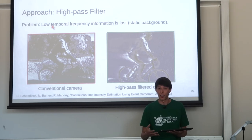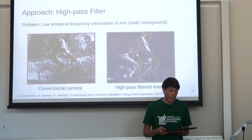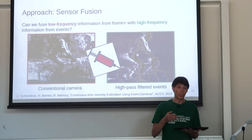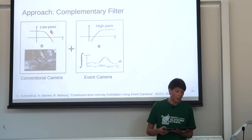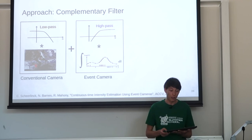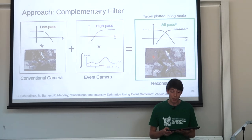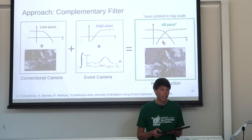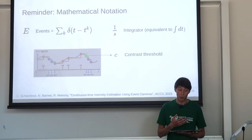The question is: can we fuse the low-frequency information from image frames into our estimate? We propose taking a low-pass filter applied to the image frames to extract low-frequency components, and a high-pass filter applied to the event camera. The result reconstructs both background and foreground well. Since we're combining low-pass and high-pass, the frequency response equals one everywhere across all frequencies.